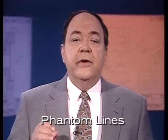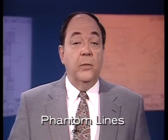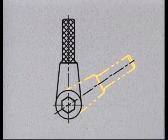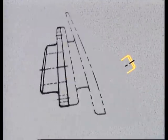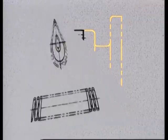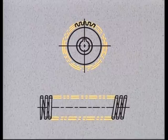Phantom lines are another drafting convention that serve several purposes. They're used to indicate that a part is movable and to define the extent of its movement. They're used to represent the position of an adjacent part, thus clarifying the relationship of components in an assembly. And to save drafting time, phantom lines are used to represent repetitive detail, such as gear teeth and spring coils. Break lines and phantom lines are part of the alphabet of lines, which you'll find in the general reference section of your application guide.